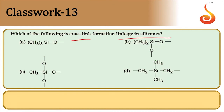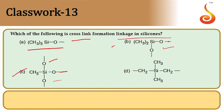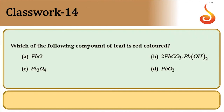Which compound forms cross-linked silicones? Cross-linking requires more than two oxygen atoms bonded. Option A forms only dimeric structure; option B can form chain or cyclic silicones; option D has no silicon–oxygen atom. Option C, with three oxygen atoms bonded to silicon, can form cross-linked polymer. Answer is option C.